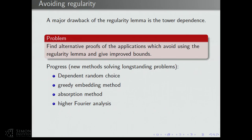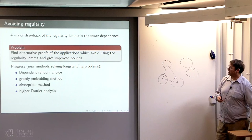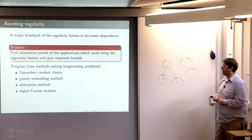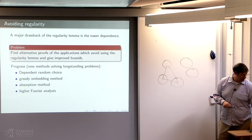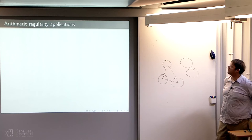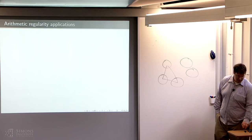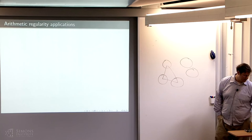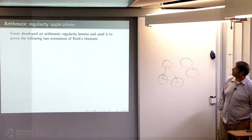Higher Fourier analysis has been very useful in applications in additive combinatorics. For Szemerédi's theorem, instead of enormous bounds from regularity methods, higher Fourier analysis gives constant tower height for bounds. There has been a lot of progress, and for many problems new proofs have been found giving better bounds. I want to finish by mentioning a couple of applications of arithmetic regularity.